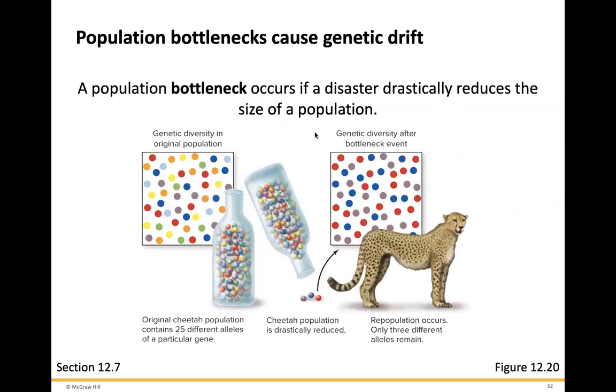Population bottlenecks can also cause genetic drift. A population bottleneck occurs if a disaster drastically reduces the size of the population.